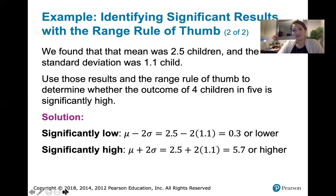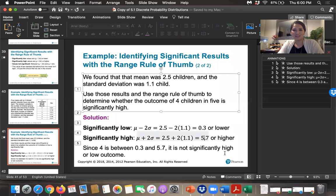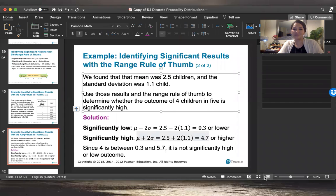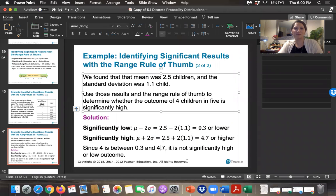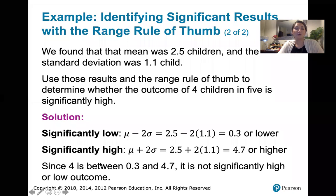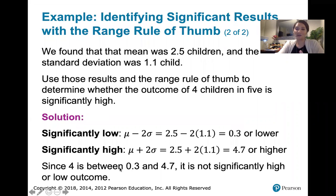Significantly high values are given by the mean plus two standard deviations or higher: 2.5 plus two times 1.1, which is 2.5 plus 2.2, equaling 4.7 or higher. Since 4 is between 0.3 and 4.7, the outcome of 4 children is not significantly high or significantly low.